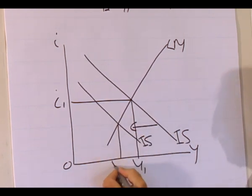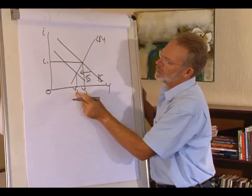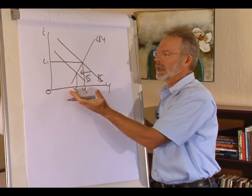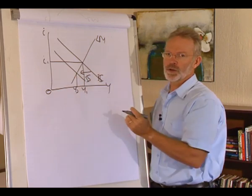The output level decreases to Y2. The question now is what can government do to increase the level of output?